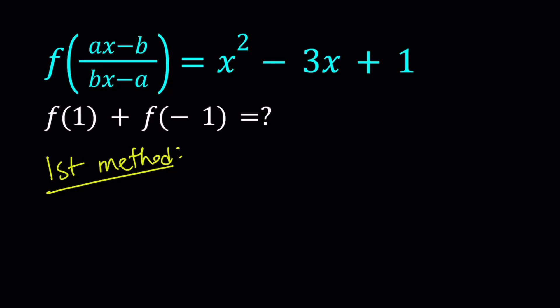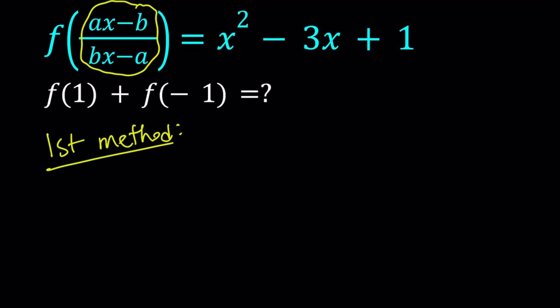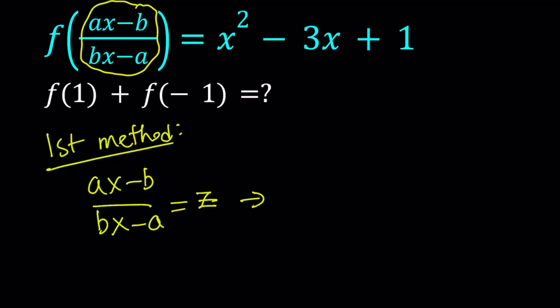My first method involves substitution. I want to get f of x, f of something. So I'm going to set this whole rational expression equal to z. I use a different variable — you can use y as well, but f of x equals y is sometimes a standard way of writing, that's why I'm avoiding y here.